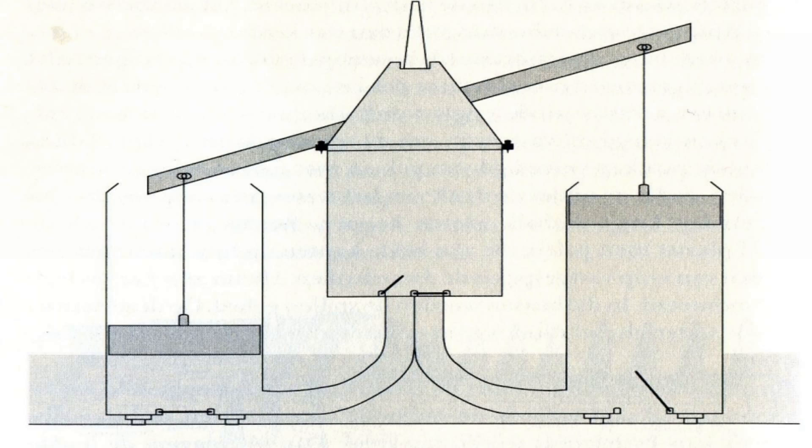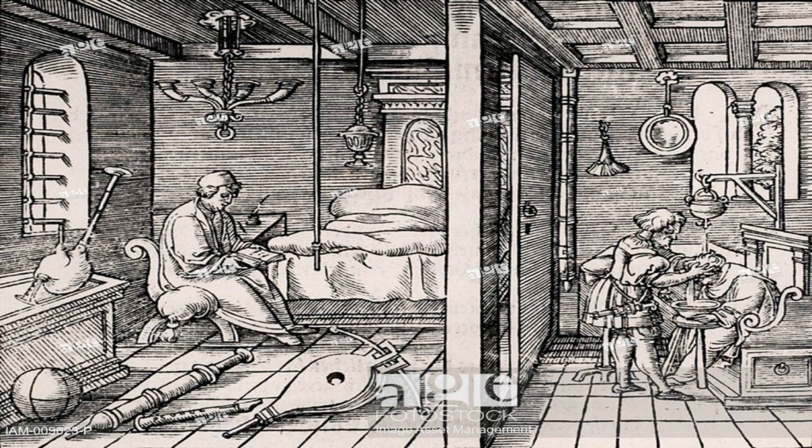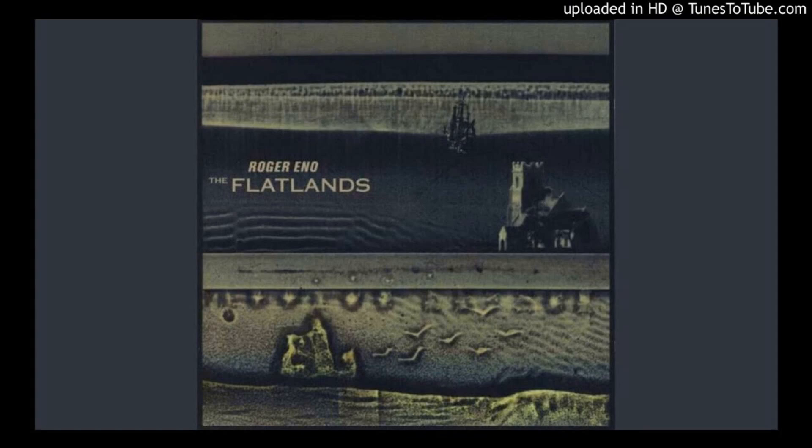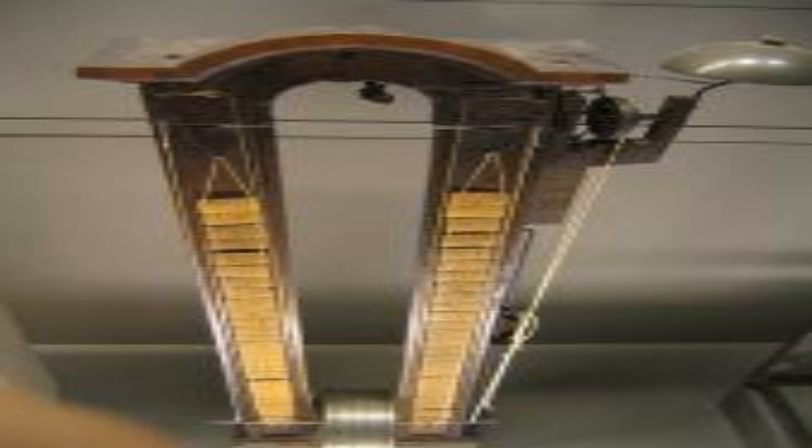Ctesibius solved this problem by inventing a float-type klepsidra, which used a three-tier system to regulate the flow of water. The first tier was a large reservoir that supplied water to the second tier, which was the actual klepsidra. The second tier had a hole at the bottom that allowed water to drip into the third tier, which was a container with a float and a pointer. The pointer indicated the time on a scale on the wall.